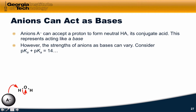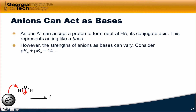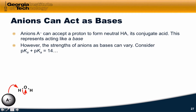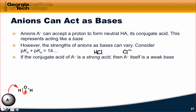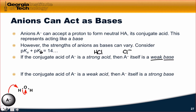The strengths of anions as bases can vary. While it seems like this should be a favorable process — going from something negatively charged to something ultimately neutral — different anions have different stabilities. If the conjugate acid of A⁻ is a strong acid, something like HCl, then the base itself, Cl⁻, is a weak base. This is based on the idea that pKa plus pKb must equal 14. If the conjugate acid of A⁻ is a weak acid, something like NH₃, then A⁻, the conjugate base, is a strong base — NH₂⁻. So NH₂⁻ is a strong base while Cl⁻ is a weak base.